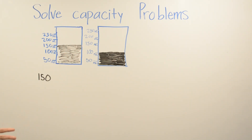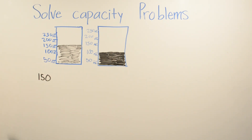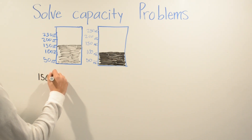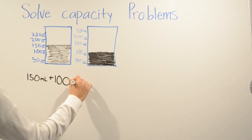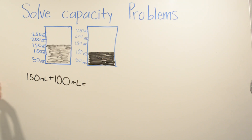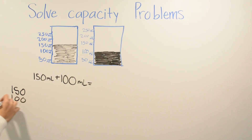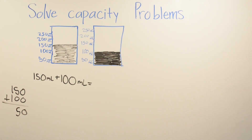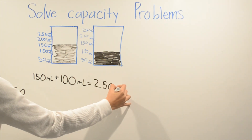The problem we have to do is find the total combined. So we have to add 150 milliliters plus 100 milliliters. We're going to do our math right here on the side: 150 plus 100. 0 plus 0 is 0, 5 plus 0 is 5, 1 plus 1 is 2. So your final answer is 250 milliliters.